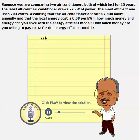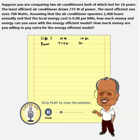The life of the first air conditioner is 10 years, and the second one is also 10 years. The power of the least efficient one is 775 watts, and the other one is 700 watts. The time of usage is given as 2,400 hours for both.